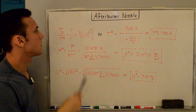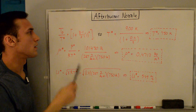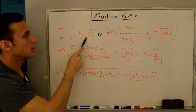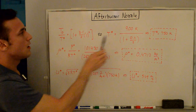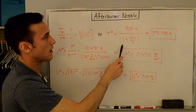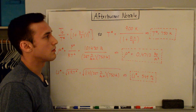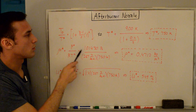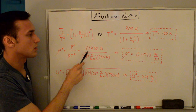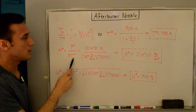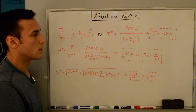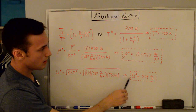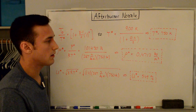Using the stagnation-to-static isentropic temperature relation with M = 1: T* = T₀ / (1 + 0.4/2) = 900 K / 1.2 = 750 K. Plugging in with P* = 101,430 Pa: ρ* = 101,430 / (287 × 750) = 0.4712 kg/m³. Then U* = √(1.4 × 287 × 750) = 549 m/s. That is the throat velocity for the non-afterburning case.